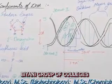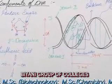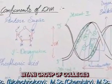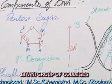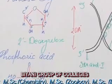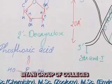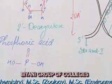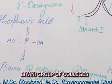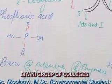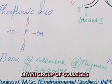Watson and Crick proposed the structure for the physiological form of DNA, that is the B-type of DNA. As you can see here, there are various components of DNA, out of which the major ones are the pentose sugar, phosphoric acid, and the bases.